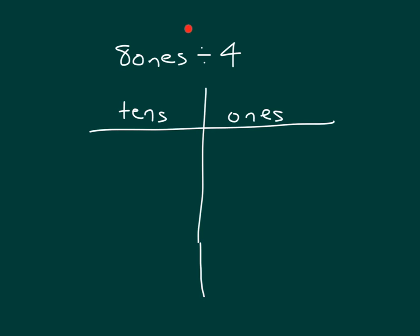Here we have the problem eight ones divided by four. Eight ones represents the whole, the total, or what you're dividing. So let's model that within the place value chart first.